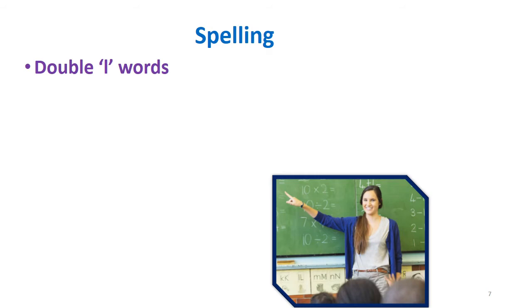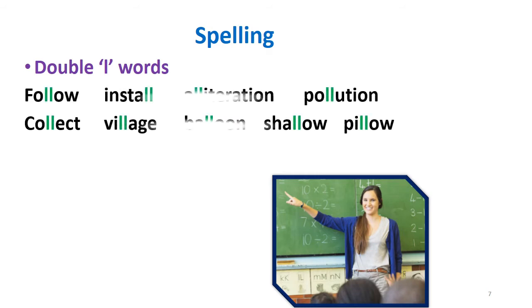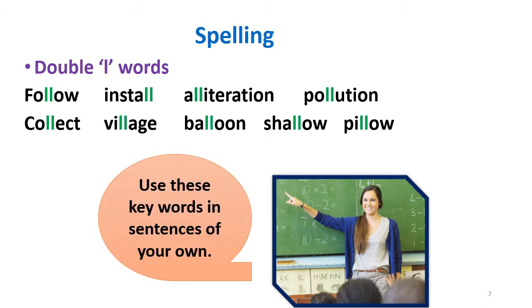Now we will move to the spelling section. What are the words with double L? Here are some words to read: follow, install, alliteration, pollution, collect, village, balloon, shallow, pillow. You can find more words like these, and you need to use these keywords in sentences of your own — make sentences by using these words.